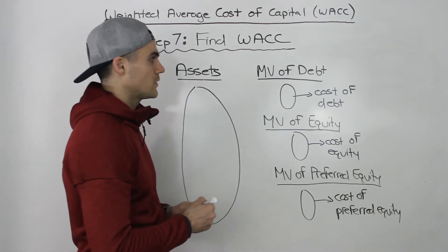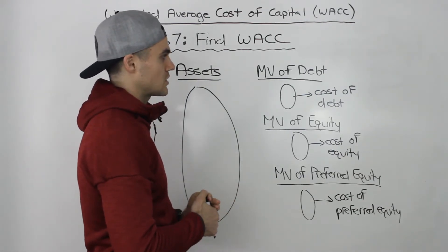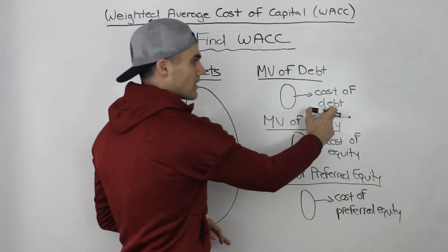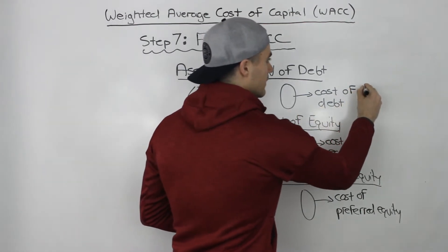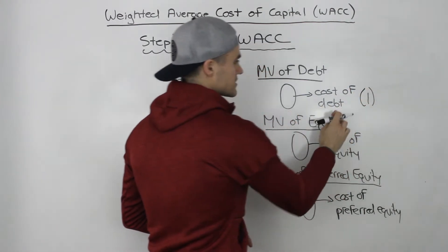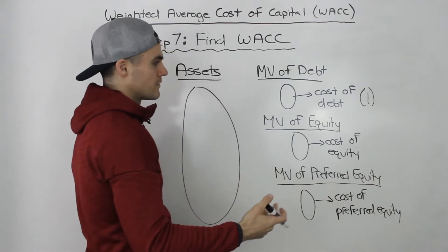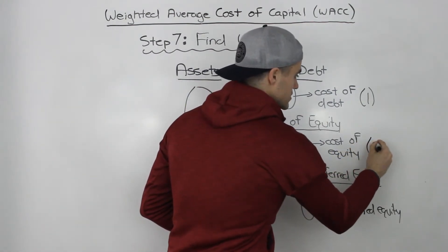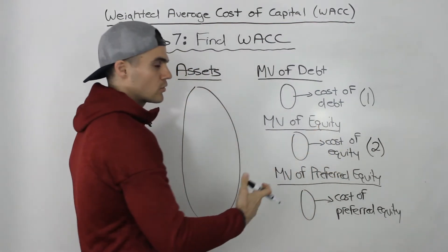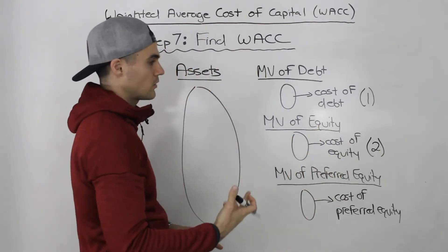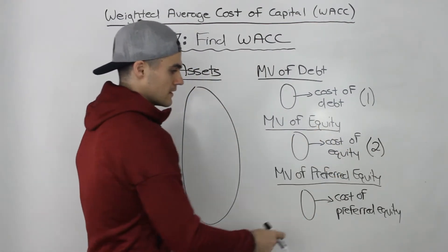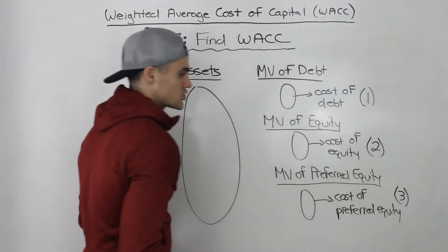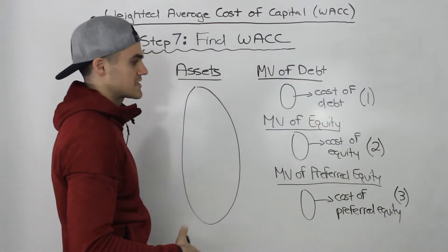So we went over a series of steps. The return that we have to pay to the debt holders, we called that the cost of debt, and we figured out what the cost of debt was in step one. Then we figured out what the cost of equity was — the return that we have to pay to shareholders or equity holders — that was step two. Cost of preferred equity, the return that we have to pay to preferred shareholders, that was step three.